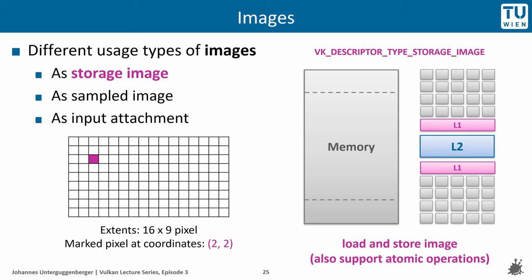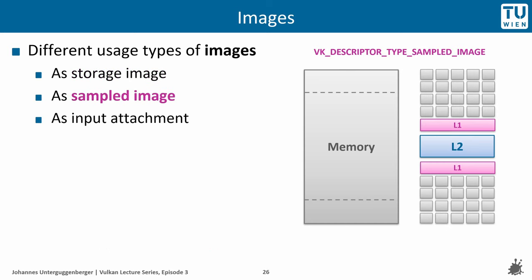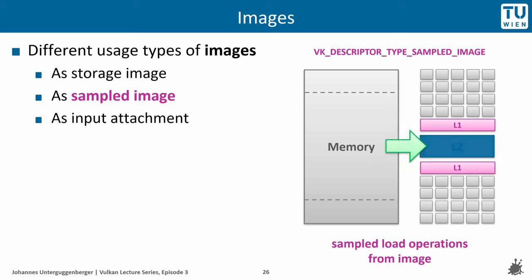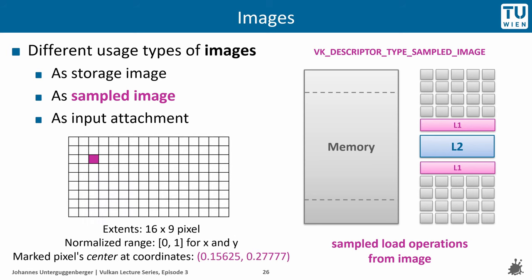A sampled image is a different usage type. It provides sampled load operations from an image, meaning store operations are not supported — only load operations, just like with uniform buffers in that regard. In contrast to storage images, sampled images are not accessed through their exact pixel coordinates but instead through normalized coordinates where all coordinate axes are normalized to a range of 0 to 1.